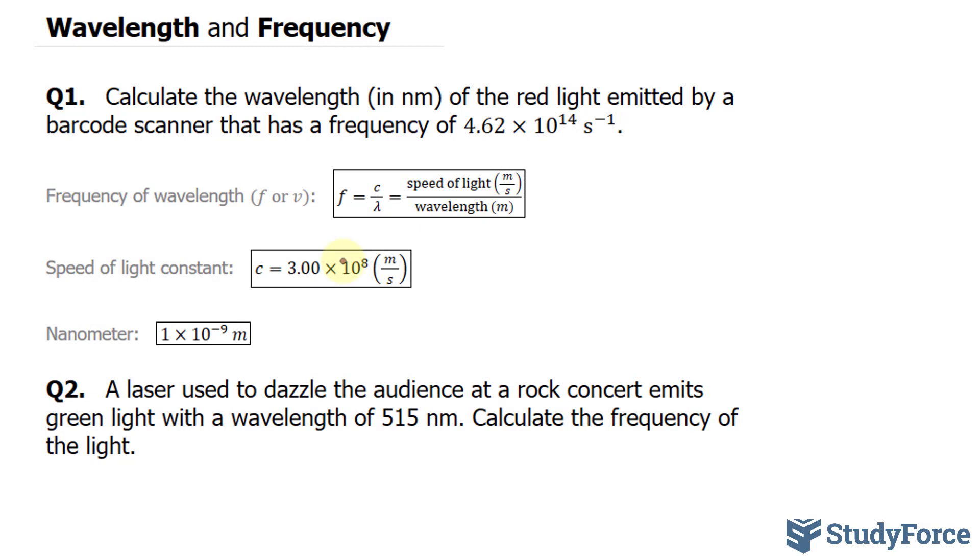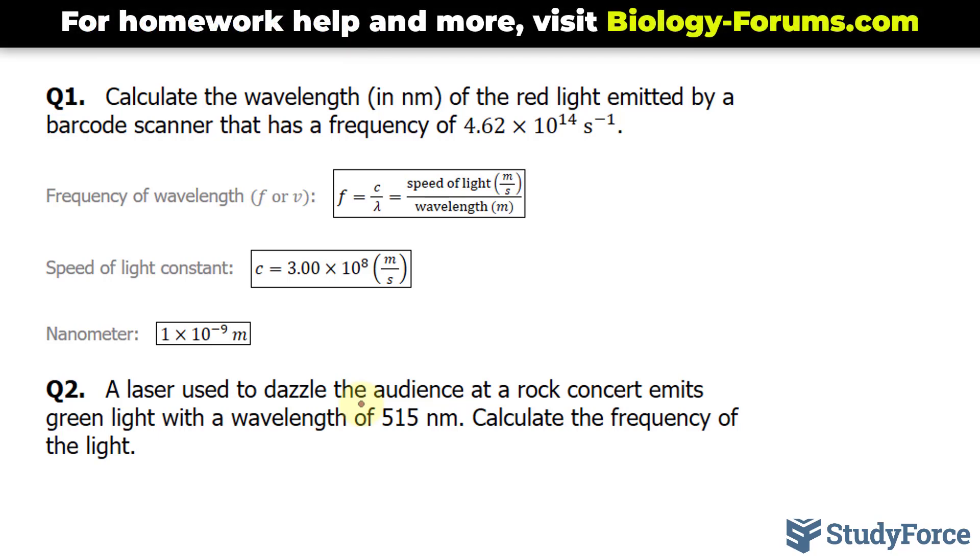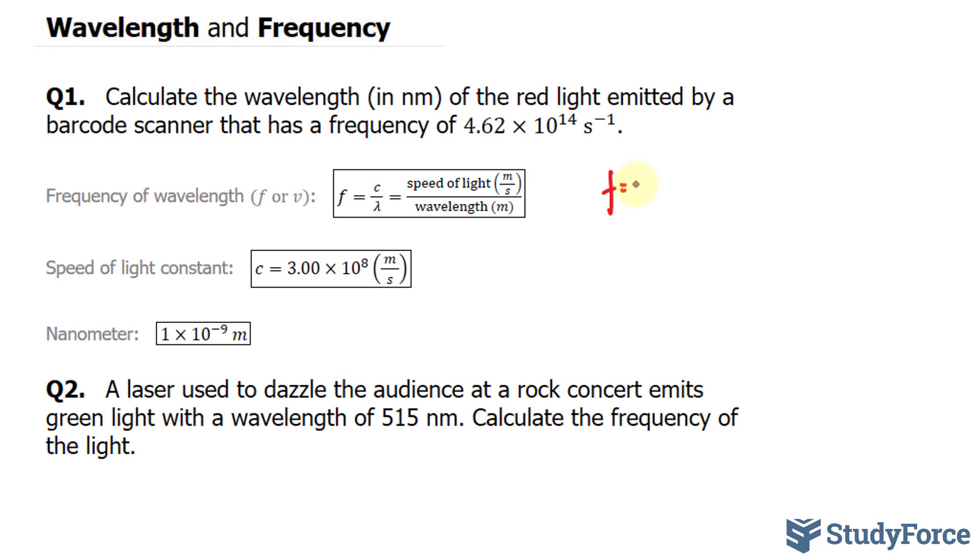To find the wavelength of this barcode, we have to use the following formula, where frequency is equal to the speed of light divided by the wavelength. We've been told the frequency, so we know that f is equal to the value shown over here. The speed of light is a constant and that's right here.